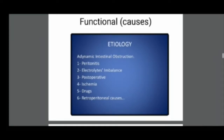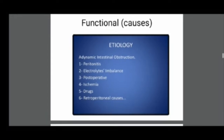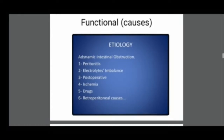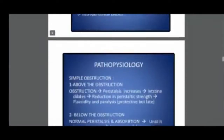Any type of muscular weakness reduces peristaltic movement. Parkinson's disease, diabetes — these also cause functional obstruction because the nervous system is affected, leading to reduced peristaltic movement.